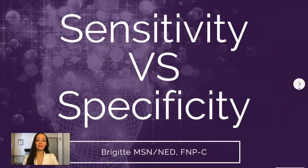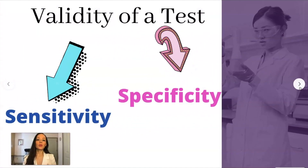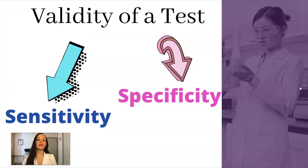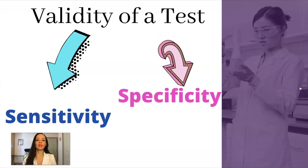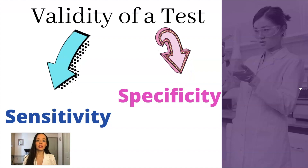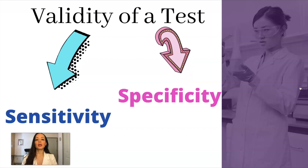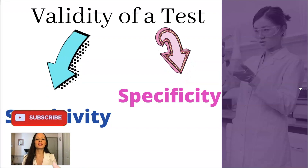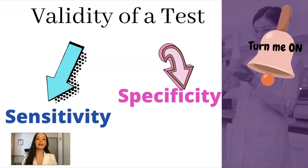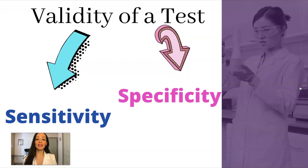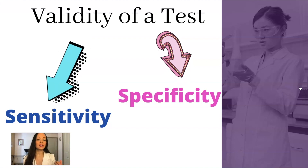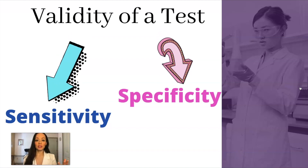Sensitivity versus specificity. The importance of looking at these two things — sensitivity and specificity — is that we use them in order to determine the validity of a test. For example, they're trying to come up with point-of-care testing for coronavirus. How sensitive and how specific are these tests means how good of a test is this? That's what validity means — how reliable is this test. Can we really trust what this test is saying?